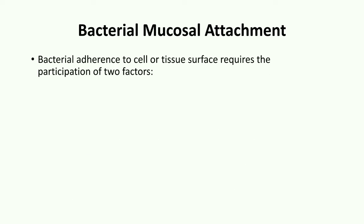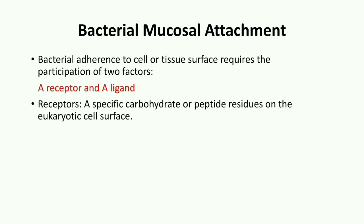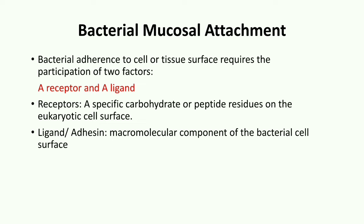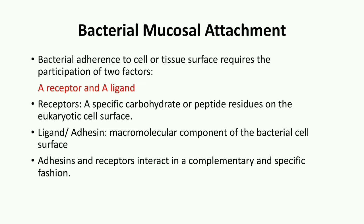Now we move to our main topic, which is bacterial mucosal attachment. Bacterial adherence to cell or tissue requires participation of two factors — mainly a receptor and a ligand. A receptor is a specific carbohydrate, very rarely a peptide residue, on the eukaryotic cell surface. A ligand, also known as an adhesin, is a macromolecular component of the bacterial cell surface. The interaction between ligand and receptor is very important for mucosal attachment of bacteria. Adhesins and receptors interact in a complementary and specific fashion.